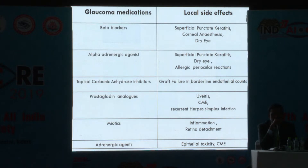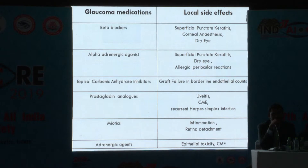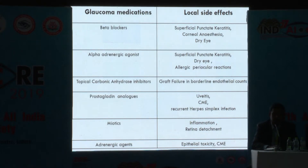Beta blockers and alpha agonists have similar local side effects including superficial punctate keratitis, corneal anaesthesia, and dry eye due to decrease in the aqueous layer of the tear film as well as quantity and quality of the mucin layer. Topical carbonic anhydrase inhibitors inhibit the carbonic anhydrase enzyme, so in cases of borderline graft endothelium they can lead to graft failure. PG analogues can cause uveitis, CME, and recurrence of herpes simplex infection, which is detrimental to graft health. Miotics can cause inflammation and retinal detachment. Adrenergic agents can cause epithelial toxicity and CME. So long term, we have to think of all these local side effects and titrate the drugs accordingly.